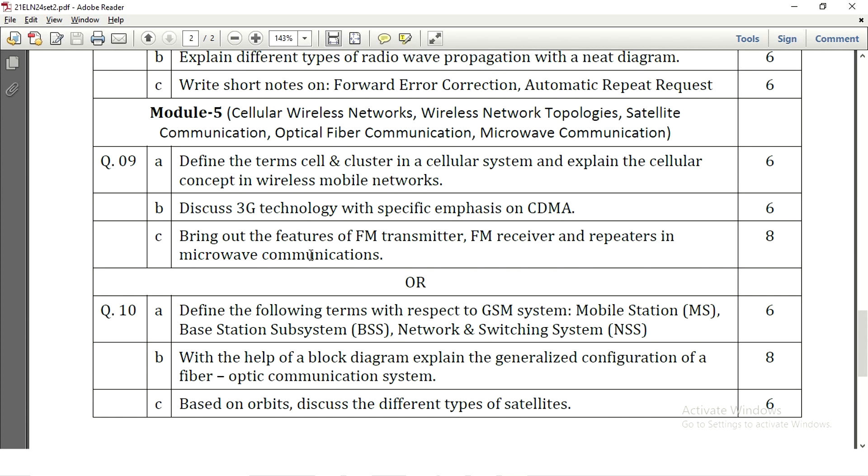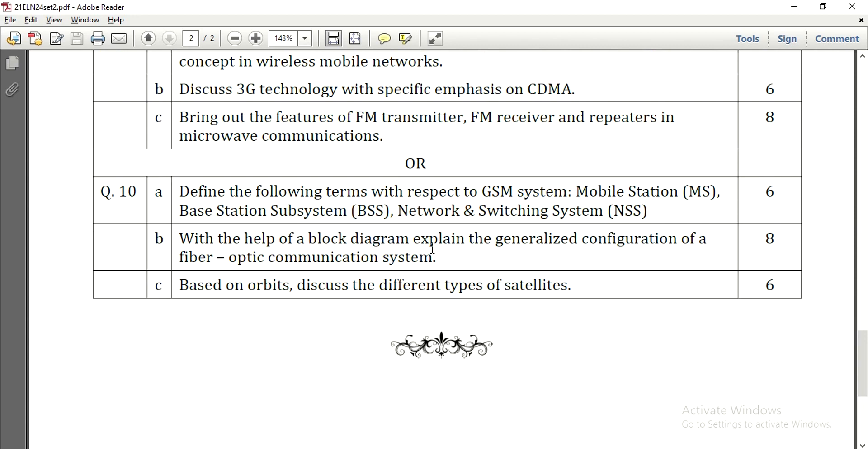Bring out the features of FM transmitter, FM receiver and repeaters in microwave communication. With respect to the microwave communication the transmitter receiver and the repeaters used in microwave will be explained with the diagrams. It carries 8 marks. Define the following terms with respect to the GSM mobile that is mobile station, what is base station that is base station subsystem and network switching system NSS. Three concepts carry 6 marks 2 plus 2 plus 2 here. With the help of block diagram explain the generalized configuration of a fiber optic communication system. So again fiber optic communication system block diagram is asked in the previous paper also. So 8 marks means 5 plus 3 we can expect 5 marks for the diagram or 4 marks for the diagram and 4 marks for the explanation. Based on orbits discuss the different types of satellites. Different types of satellites they are asked to write with respect to the orbits are concerned it is for 6 marks.